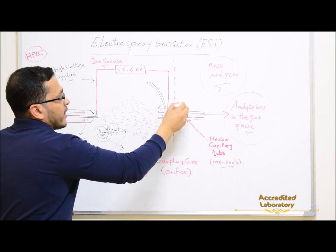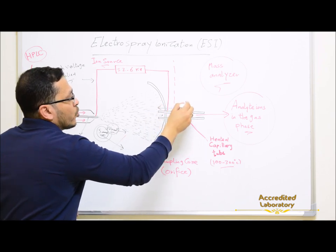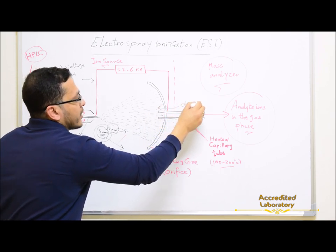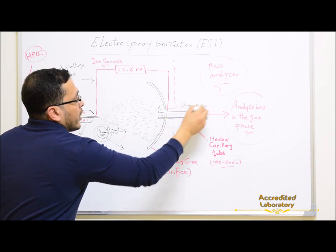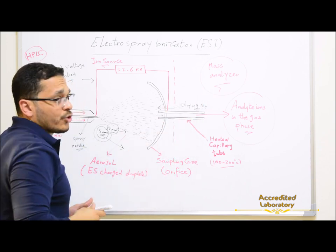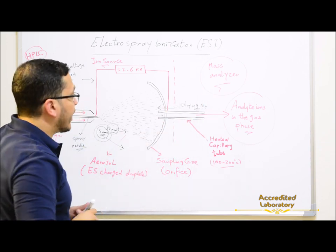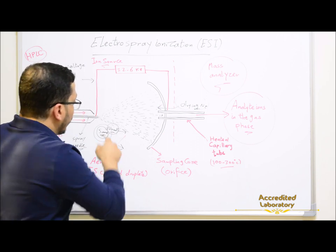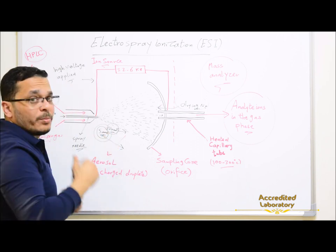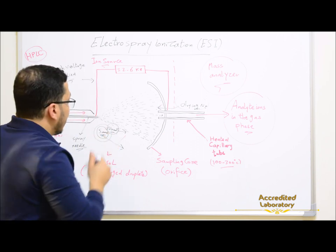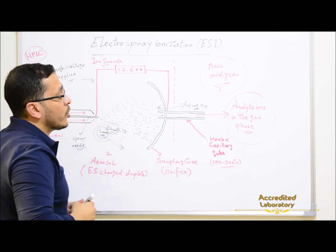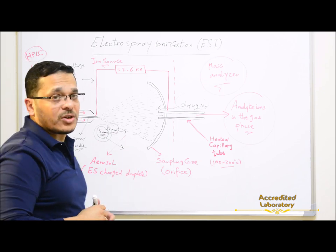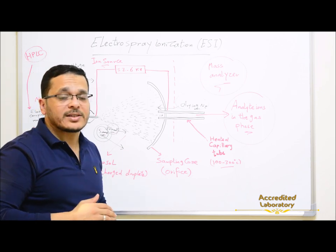These solvent molecules will be evaporated by the aid of a heated capillary and drying gas, which is nitrogen gas. By the aid of the drying gas and heated capillary, the solvent molecules will be evaporated and only analyte ions in the gas phase will be transferred to the mass analyzer.